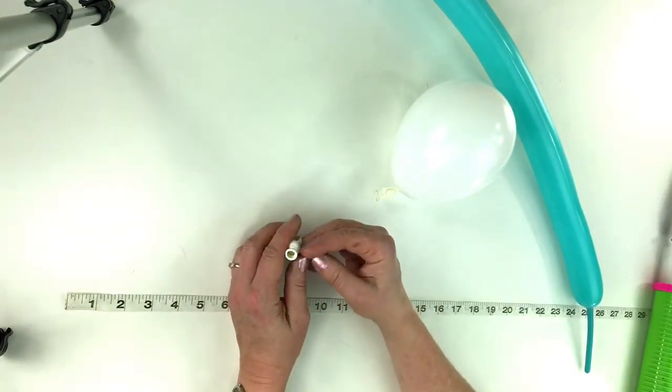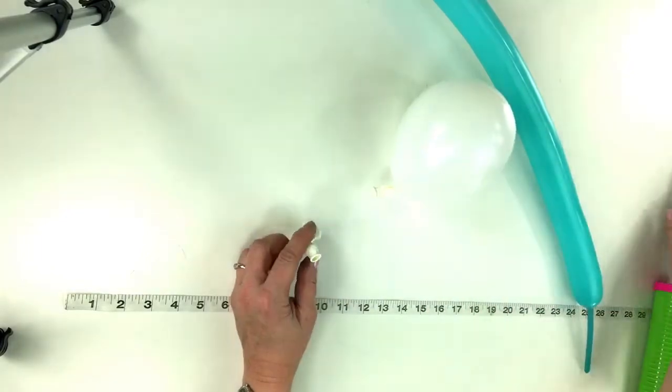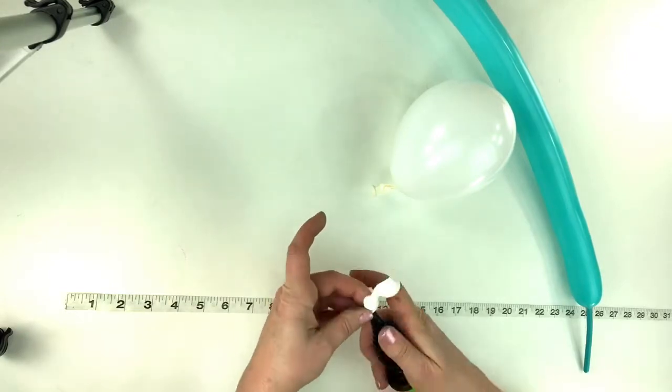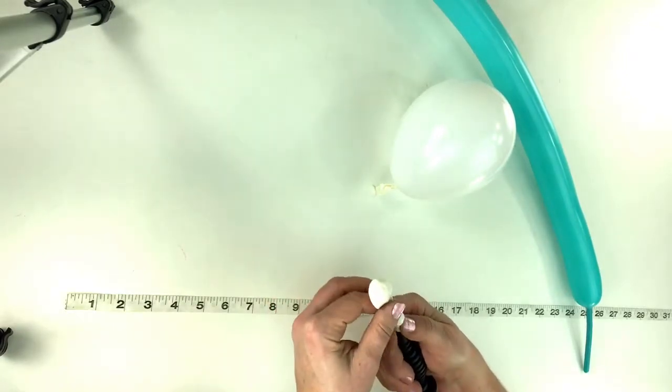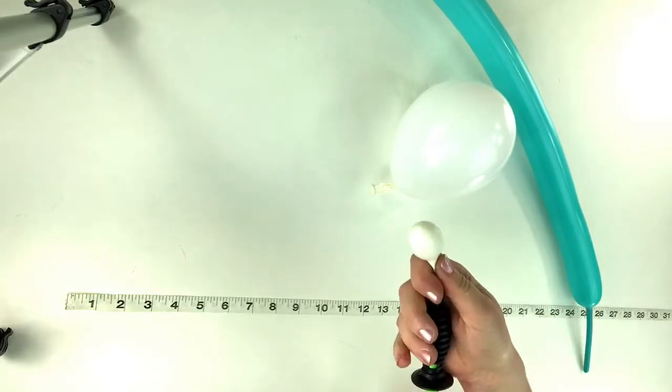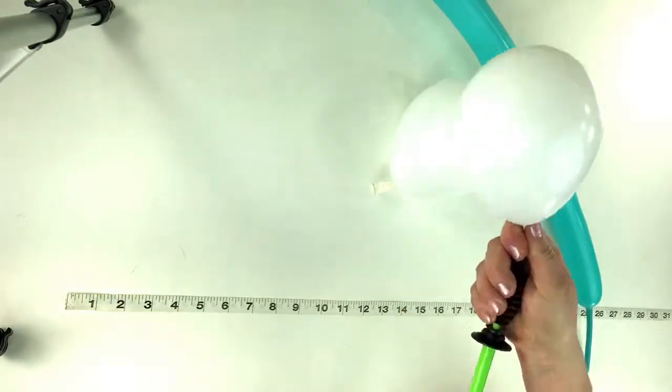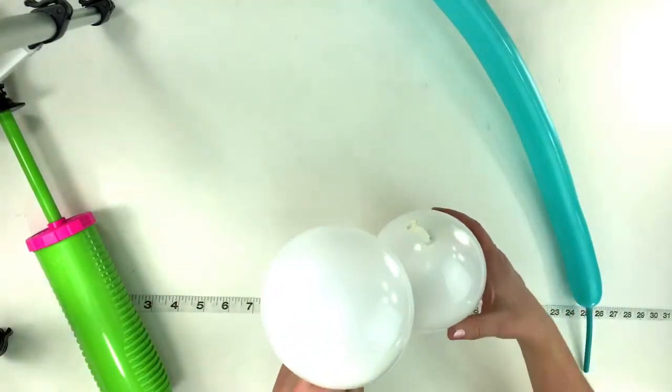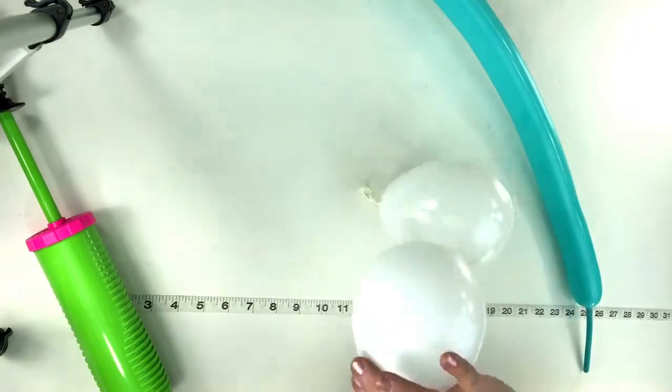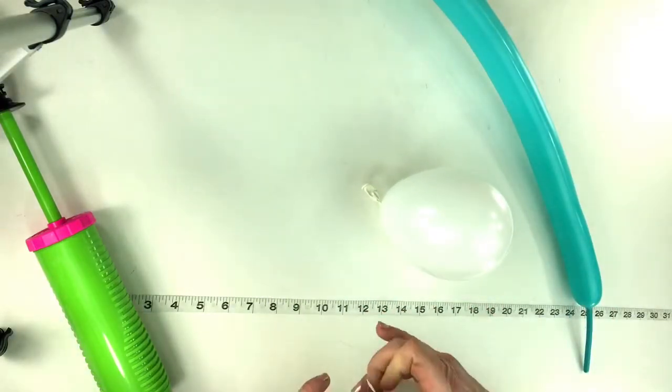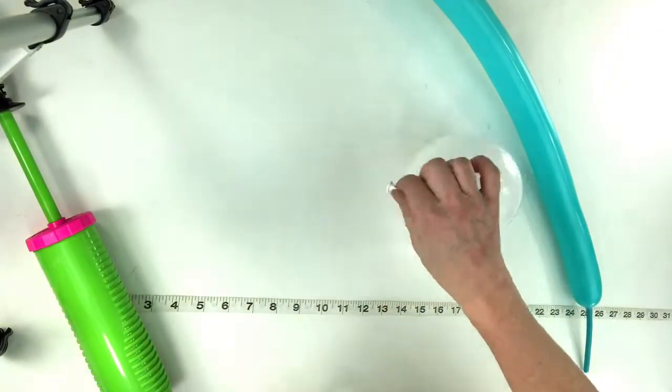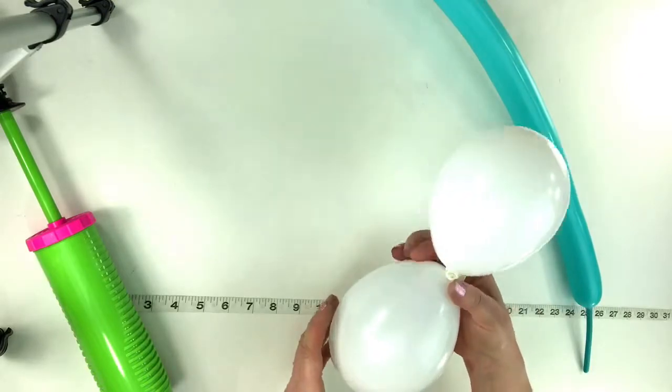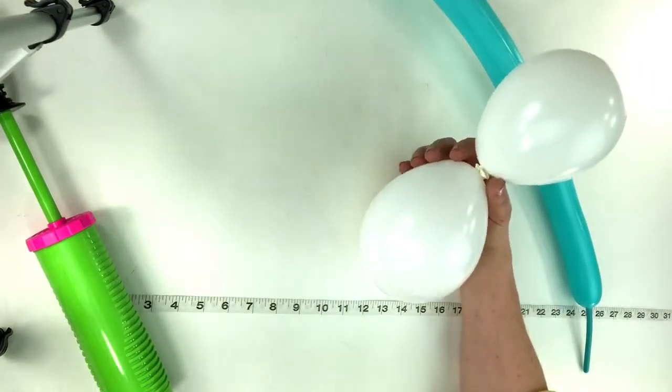So you pull the little tab out, and then you just start inflating the balloon and it will fall in there. Blow the bottom up maybe a little. It should be a little bit bigger or the same size as the bottom of the snowman, and tie it. Then you're gonna tie these two ends together.